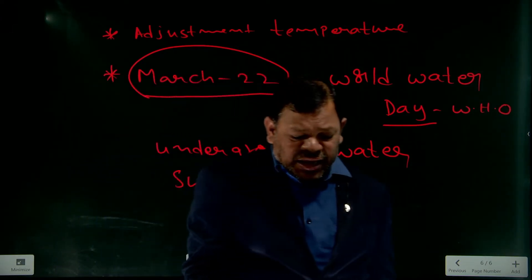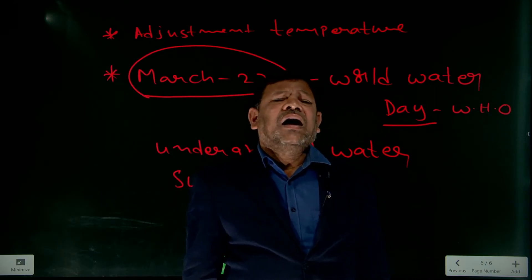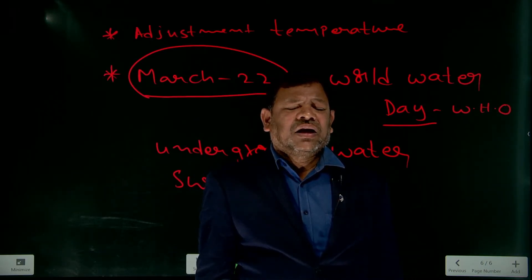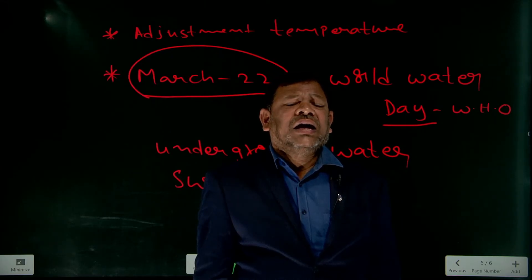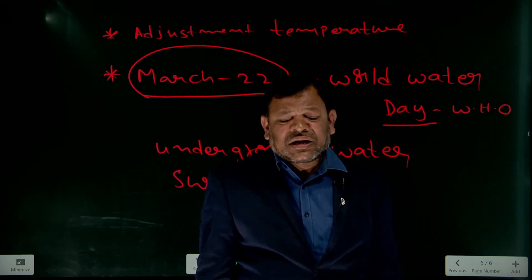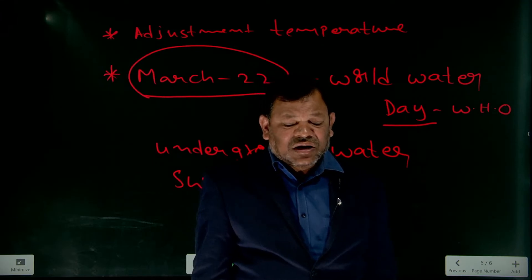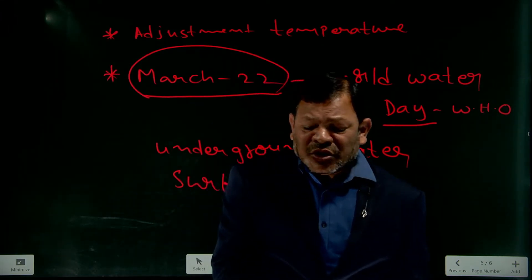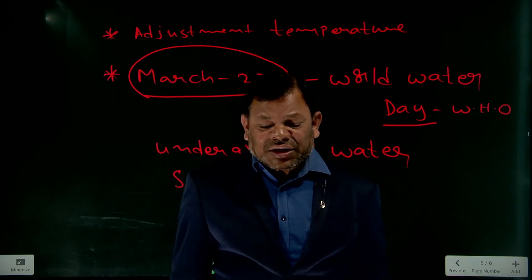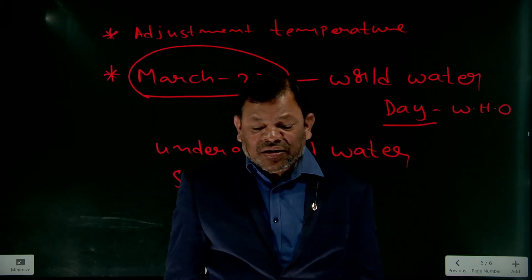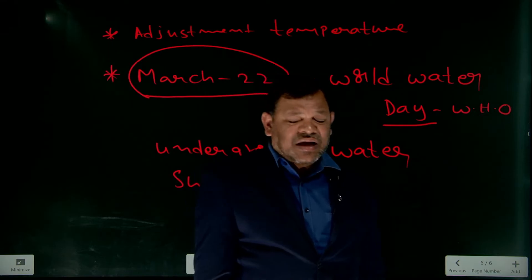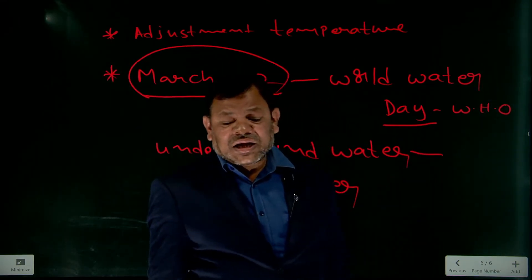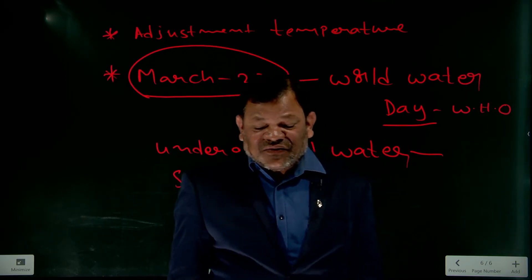Underground water — the majority of pure water comes from rain. Rain water is the pure water. Examples of underground water are well water and spring water.